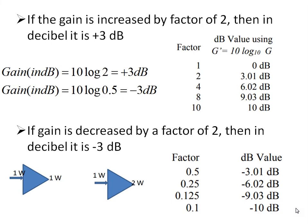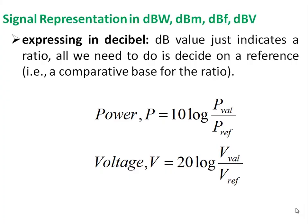If the gain is increased by a factor of 2, in decibels it is plus 3 dB. A factor of 1 means 0 dB, meaning output equals input. A factor of 2 means plus 3 dB. If the output is half of the input, it's minus 3 dB. Minus 3 dB is commonly used for determining the bandwidth of an amplifier.